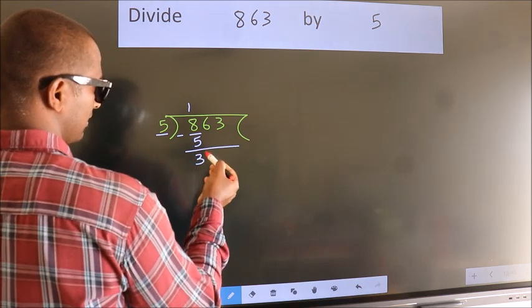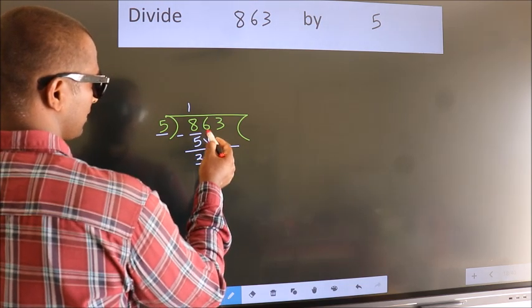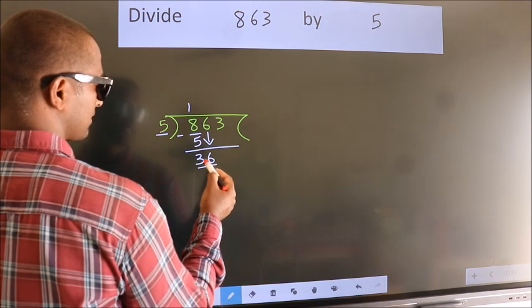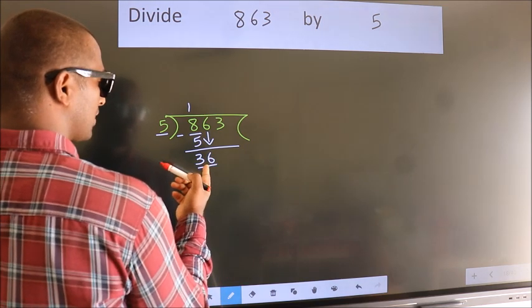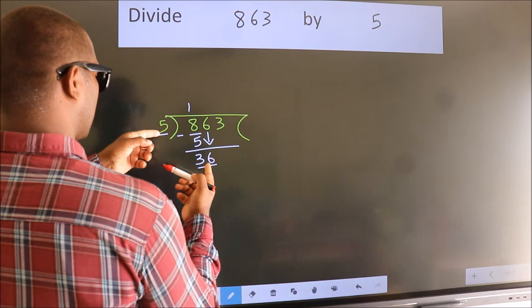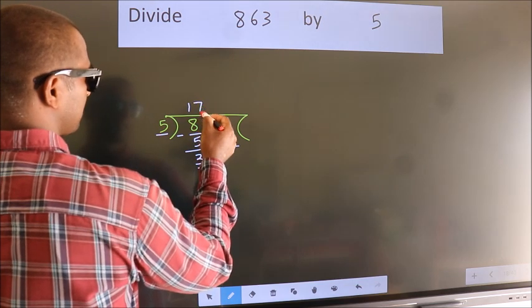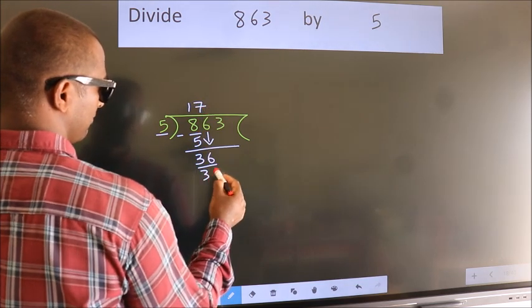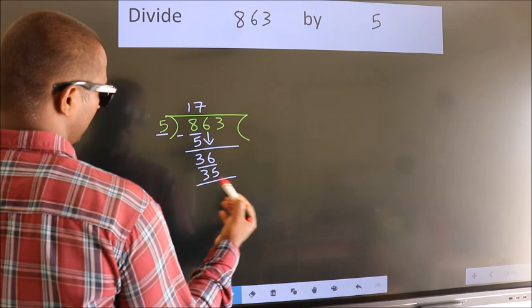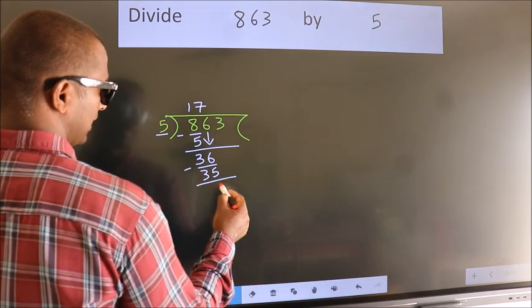After this, bring down the next number, so 6 down, giving us 36. A number close to 36 in the 5 table is 5 sevens, which is 35. Now we subtract; we get 1.